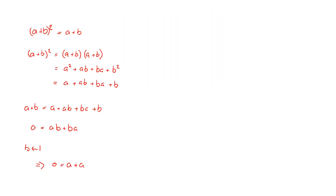We can easily see this from the proof we had before. In that proof we showed that zero equals ab plus ba. But since every element is its own additive inverse, it follows that ab equals ba. This means the Boolean ring is commutative under multiplication.